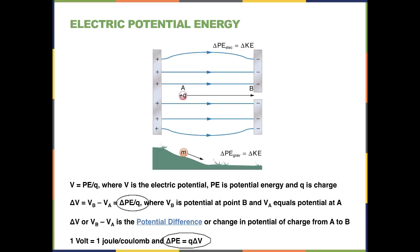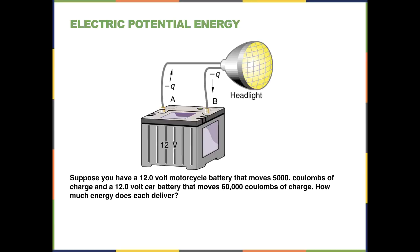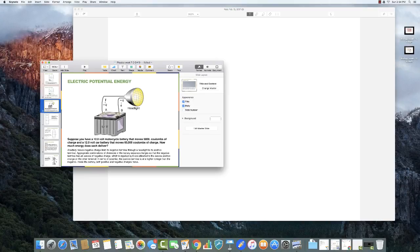Thus, the change in potential energy is going to equal the charge times the potential difference. So the potential difference is equal to the change in potential energy divided by the charge, and therefore the change in potential energy equals the charge times the potential difference. We have a battery here, and batteries produce voltage or potential differences.